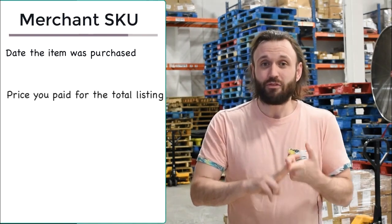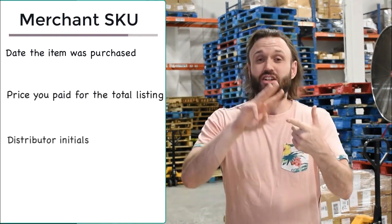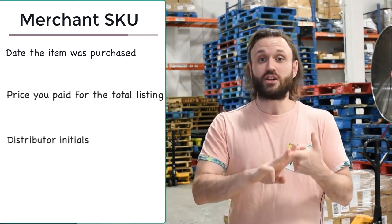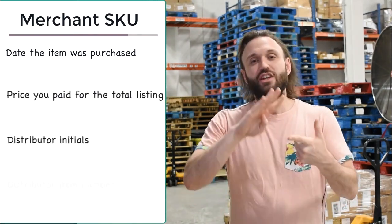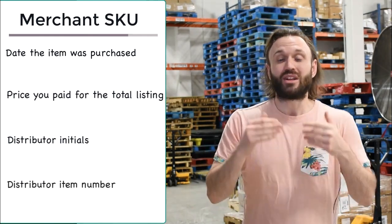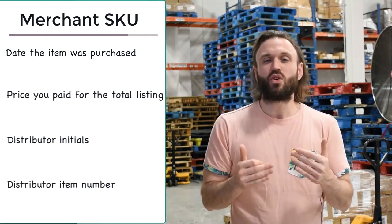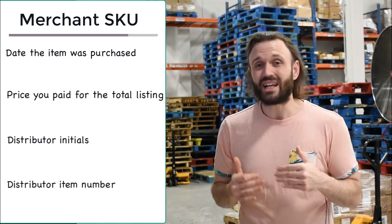It's the date that item was purchased, the price that you paid for the total listing, the distributor initials, and the distributor's item number. This information will allow you to, at a quick glance, see the pertinent information that will make reordering and ordering this product much easier.